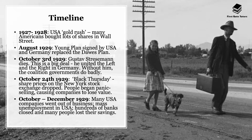Without Stresemann, the coalition government of the Weimar Republic started to do really badly. On America's side, October 24th 1929 was a defining moment — this is when Black Thursday happened. Share prices on the New York Stock Exchange dropped, meaning the cost of owning a piece of a company fell, reducing those companies' value. This resulted in people who started panic selling.